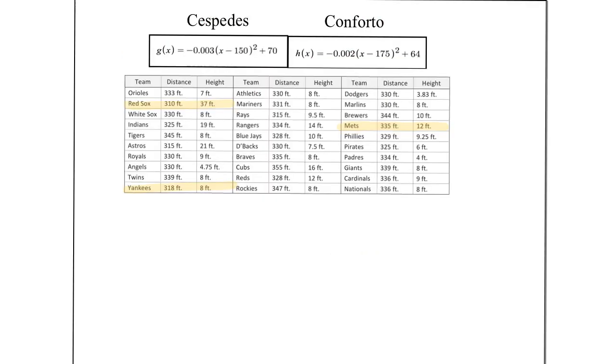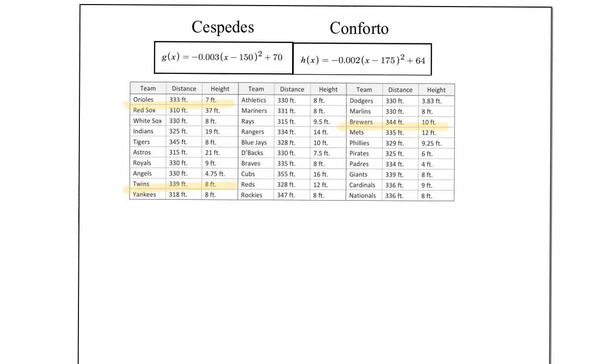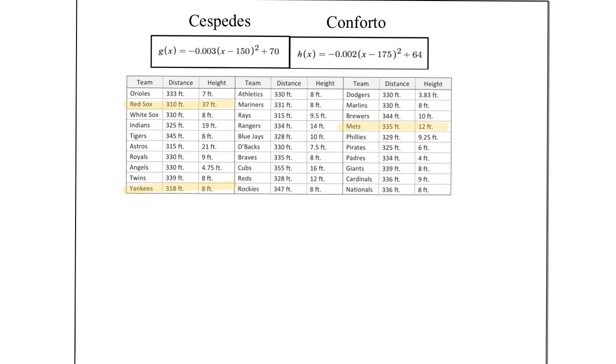Part two is going to be heavily connected to part one in the sense that we're going to be using the home runs that we found in part one. So recall that Michael Conforto did hit a home run, where Cespedes we found did not. And you can pick any three parks you like here for your testing process. We're basically going to be checking if these would be home runs in other parks.